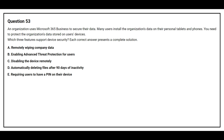Option A: Remotely wiping company data. Option B: Enabling advanced threat protection for users. Option C: Disabling the device remotely. Option D: Automatically deleting files after 90 days of inactivity. Option E: Requiring users to have a PIN on the device.